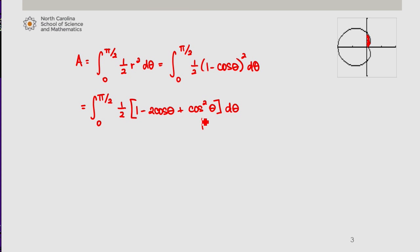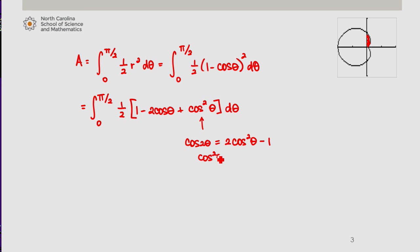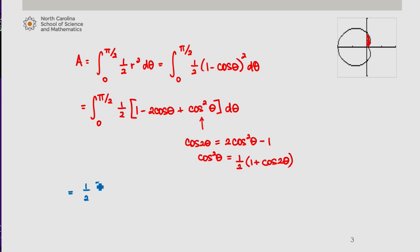In order to make this integration simpler, I'll use a trig identity: cosine of 2 theta equals 2 cosine squared theta minus 1. Solving for cosine squared, I get one half times 1 plus cosine of 2 theta. That expression is easier to find the antiderivative of, so I'll pull the one half out: one half times the integral from 0 to pi over 2 of 1 minus 2 cosine theta plus one half times 1 plus cosine of 2 theta.